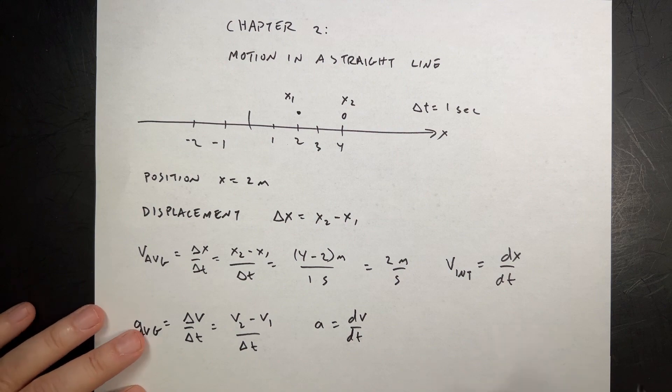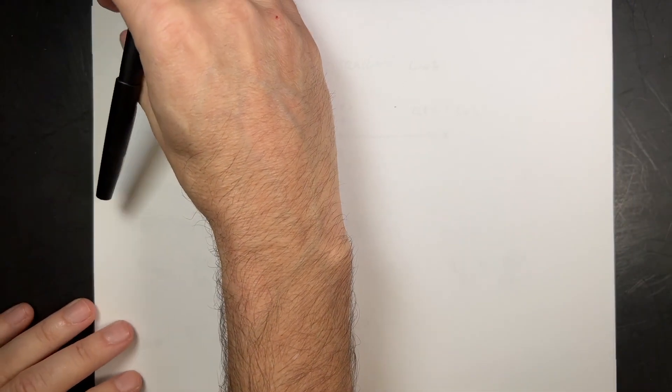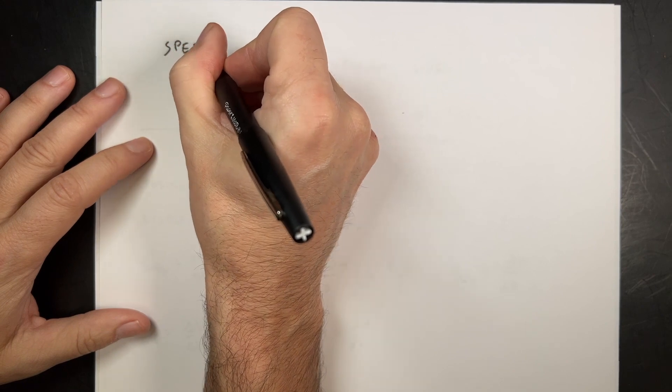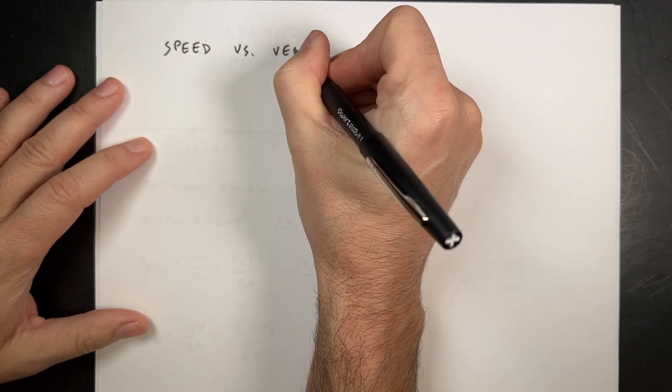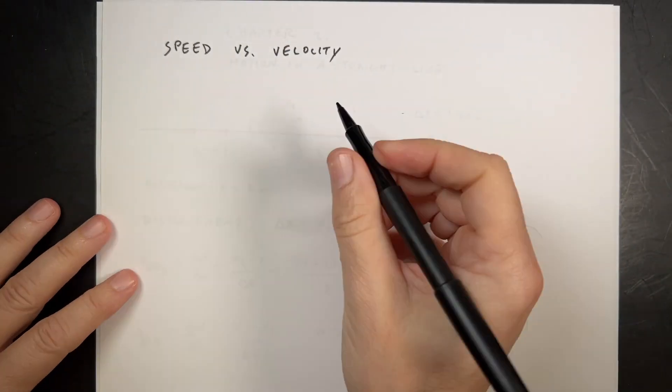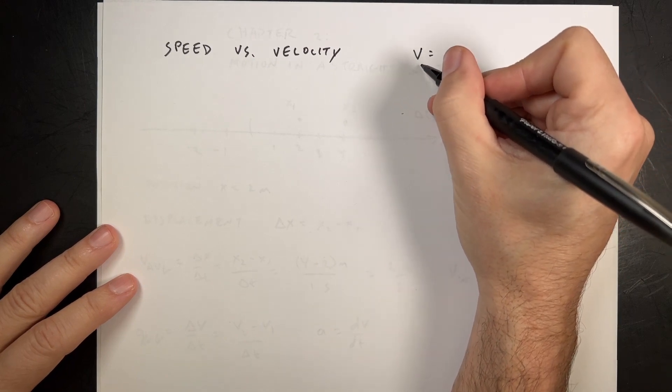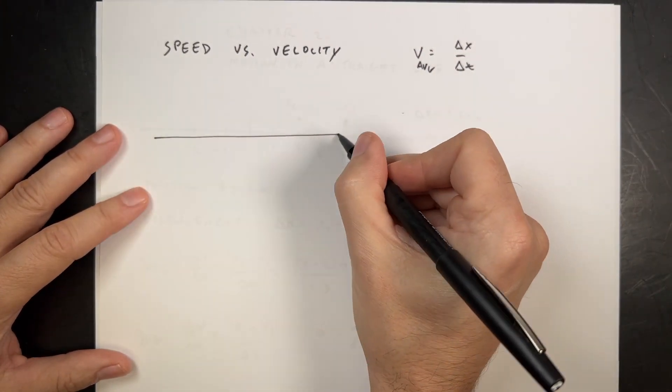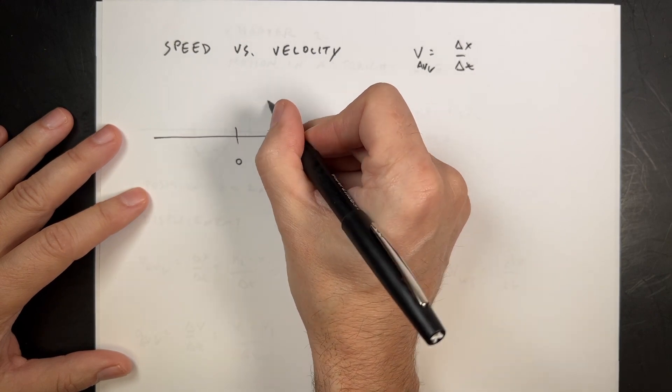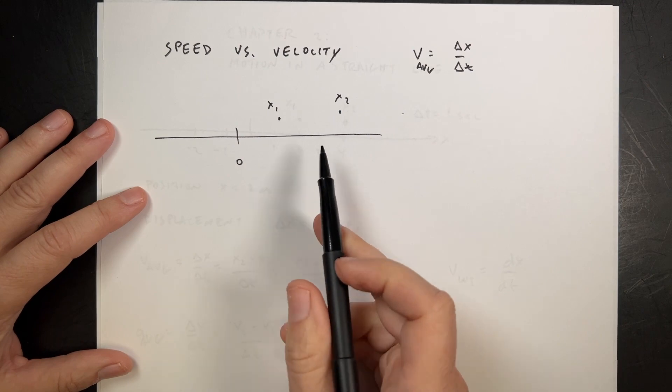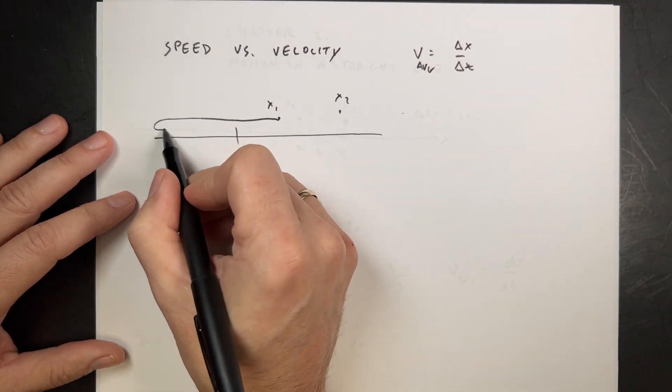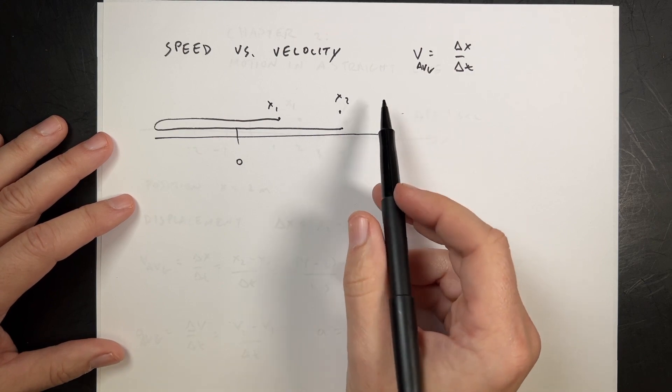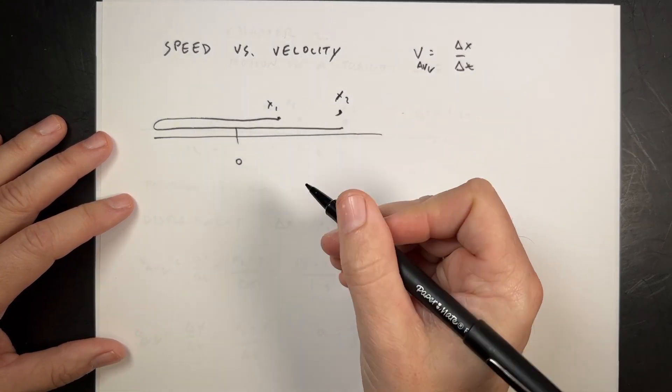There's two special definitions that we need to look at. First is speed versus velocity. Average velocity is delta x over delta t. So if I go back to my number line, I have zero, and I start here at x1 and finish at x2, then I can calculate the average velocity. But what if I went all the way back and then forward? Average velocity doesn't care. Average velocity just depends on where you started and where you ended up.